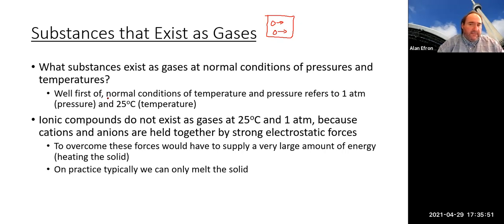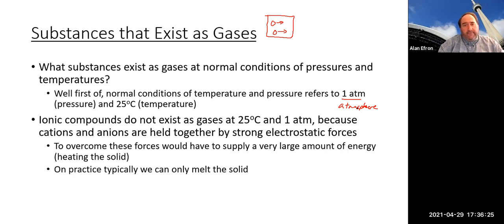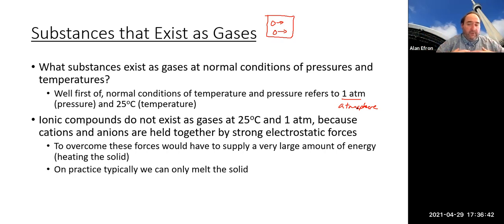When we talk about normal conditions, we're talking about room temperature conditions — everyday conditions — which refers to a pressure of one ATM, an atmosphere, which is a unit of pressure, and 25 degrees Celsius. If you look at tables of thermodynamic values like delta H, delta S, or delta G in general, the normal temperature we usually think of is about 25 degrees Celsius.